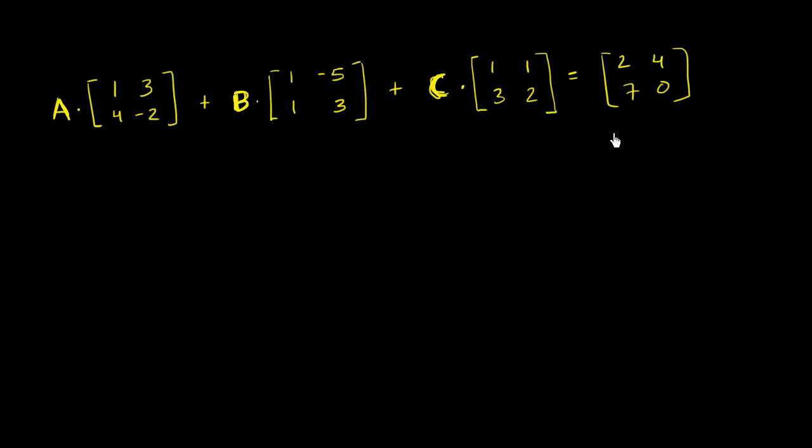So we have a matrix equation set up right over here. We have matrix A times this, plus matrix B times this, plus matrix C times this, is equal to this 2 by 2 matrix. And the way it's set up, it's a little bit of a puzzle. And I'll give you one clue as to what type of matrices A, B, and C could be.